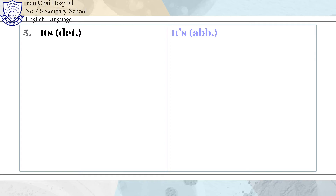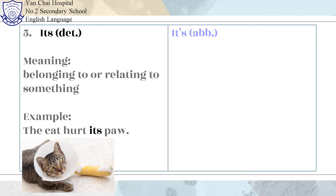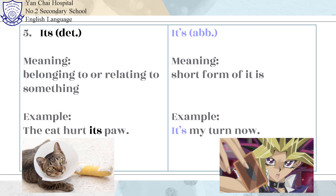Number 5: Its and It's. Its means belonging to or relating to something. Example: The cat hurt its paw. It's is the short form of it is. Example: It's my turn now.